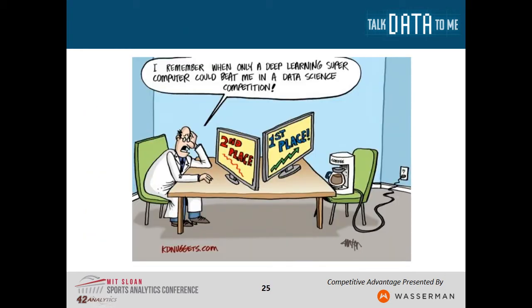I want to close with a comment about where we stand in society. There's a comic where a coffee maker has just beaten a scientist in a data science competition — 'I remember when only a deep learning supercomputer could beat me.' Everything that can be automated will be automated. This is happening in machine learning, but we can take advantage of it and use it to drive better decisions. Thank you — are there questions?